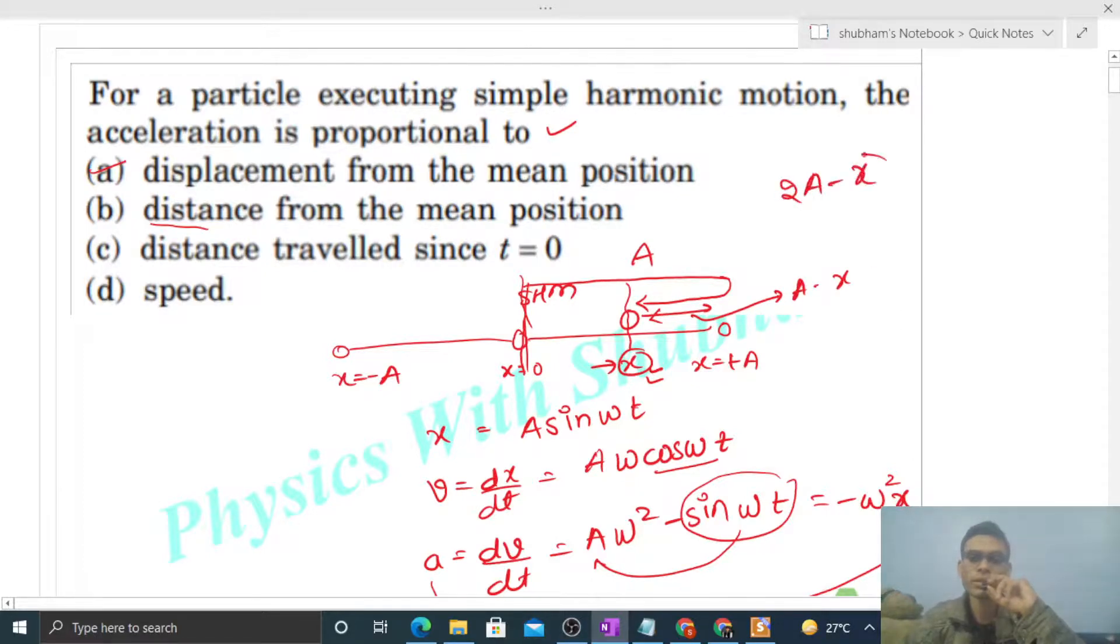Acceleration is not proportional to 2A minus x; it is proportional to x. So option B is wrong. Distance traveled since time t equals zero, option C is the same here.